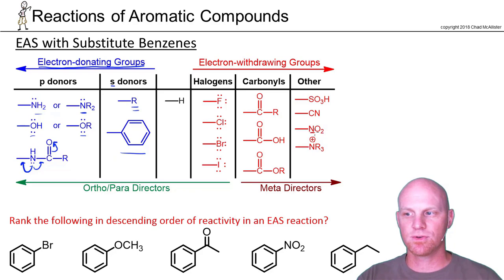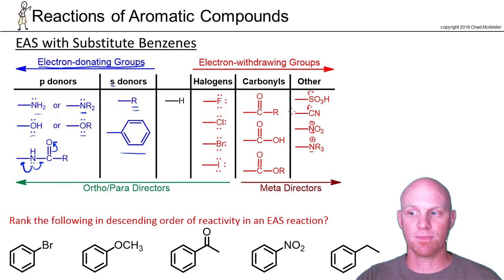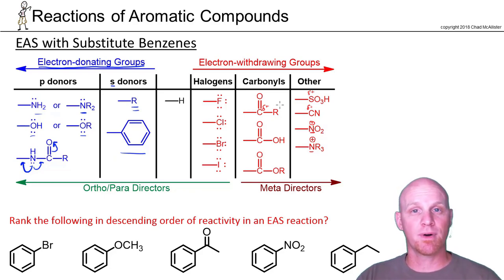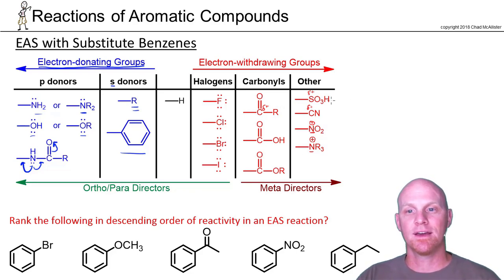If you look at the NO2 group, there's a positive formal charge right on the nitrogen, and so you've got a big positive formal charge on the atom directly attached to the ring. With the carbon-nitrogen triple bond, you've got a partially positive atom attached. Sulfur bonded to three oxygens is also partially positive. Same thing with all these carbonyls that are moderate withdrawing groups — they're all partially positive. So when the atom directly attached to your benzene ring has a partial positive or full positive formal charge, those are your electron withdrawing groups. Halogens are the least withdrawing, then carbonyls, and then all the rest are your strong withdrawing groups.